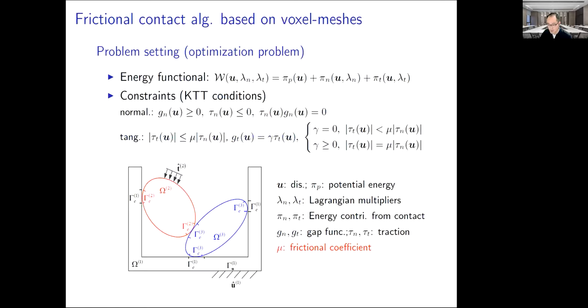We all know that the contact problem is essentially an optimization problem. The energy function includes the traditional potential energy and the contact contributions. U is the displacement. Lambda is the Lagrangian multiplier. Subscripts N and T represent normal and tangential directions. KTT conditions as the constraints should be fulfilled.